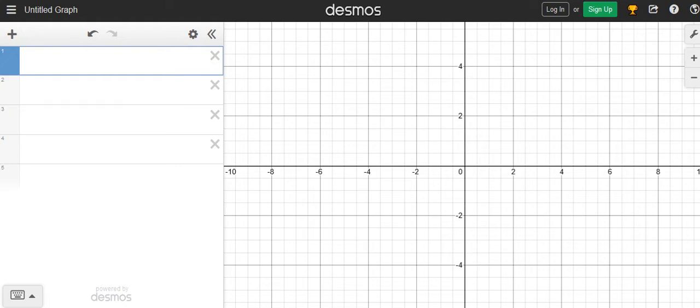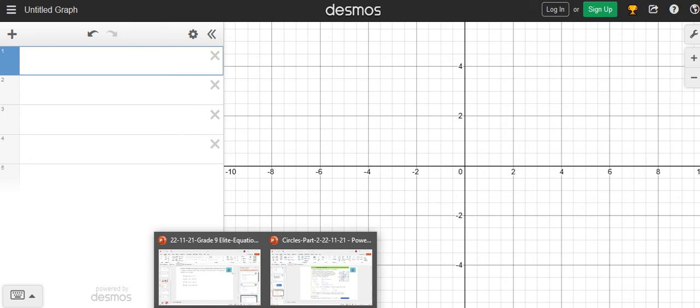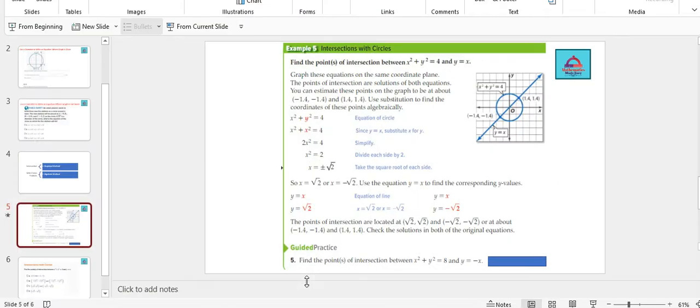The first equation we'll be graphing is the equation of the circle: x² + y² = 4. Then we have to see what are the points of intersection of this circle with the line y = x.